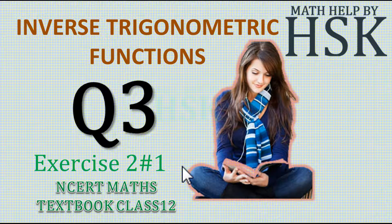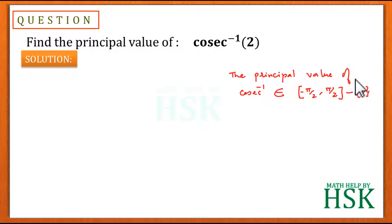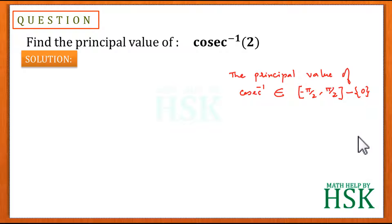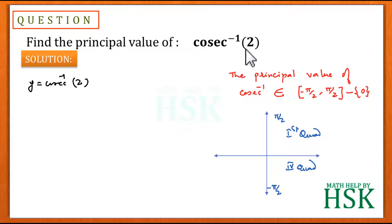Taking question number three of exercise 2.1, we have to find the principal value of cosec inverse of 2. To solve this, we should know that the principal value of the cosec inverse function belongs to the closed interval minus pi by 2 to pi by 2, except the element 0. This means we have to find the principal value in the first quadrant or the fourth quadrant. We assume the principal value of cosec inverse of 2 is equal to y.